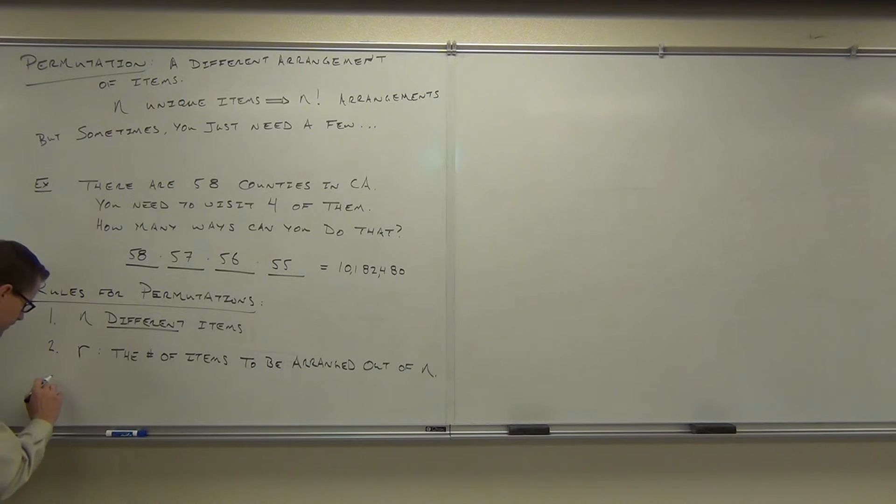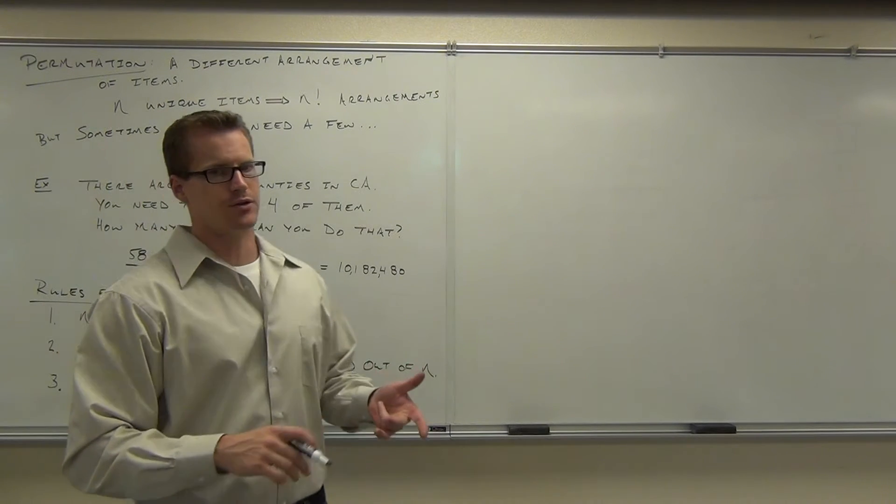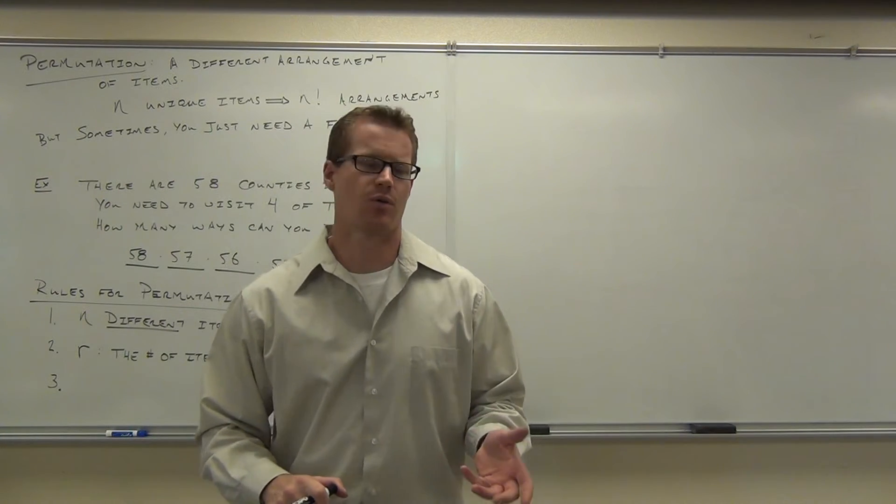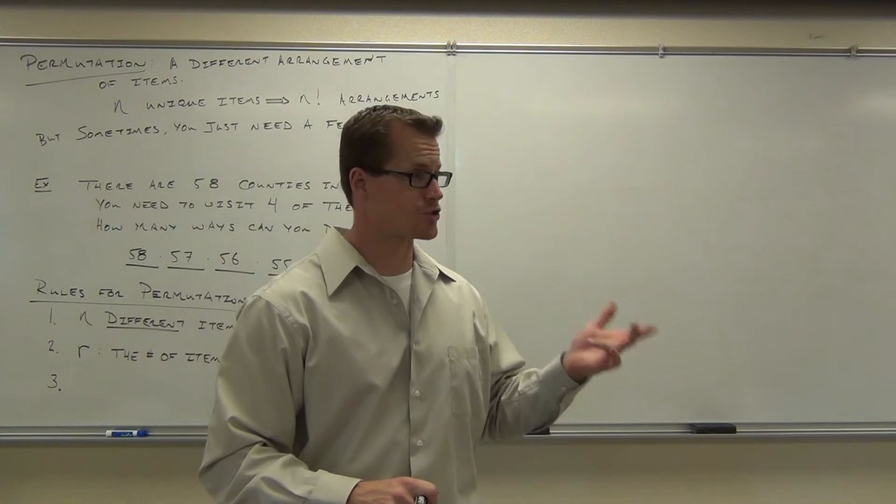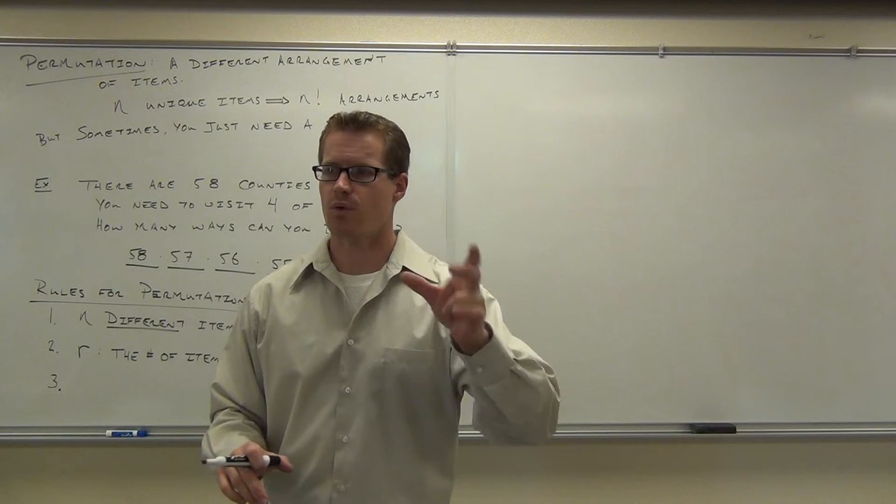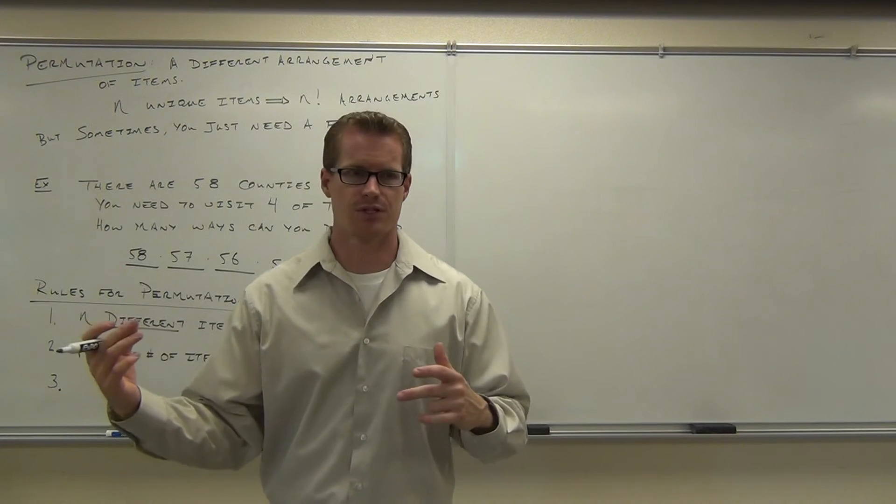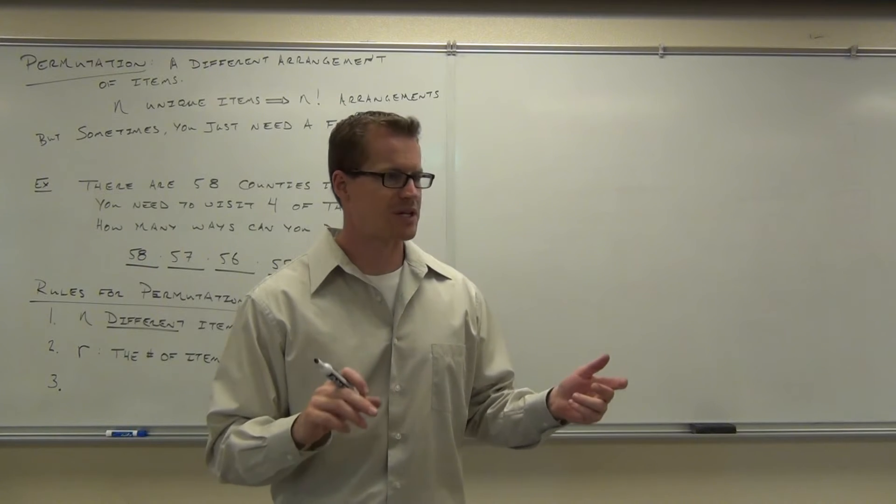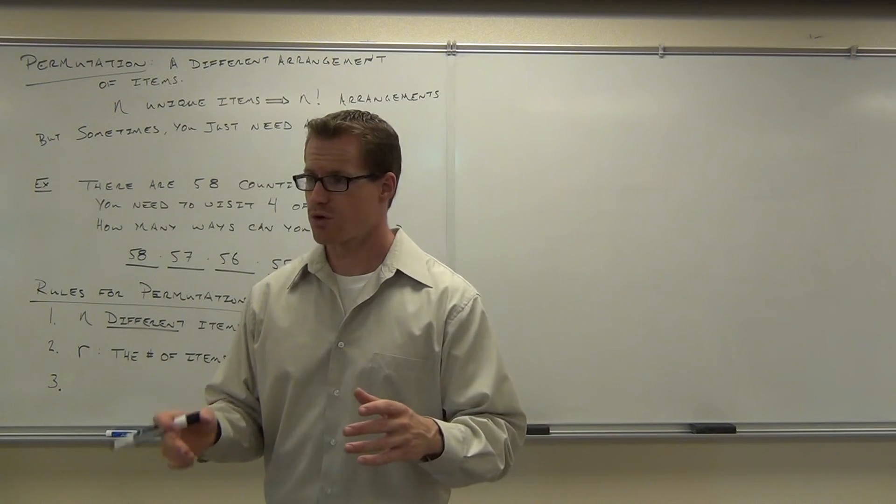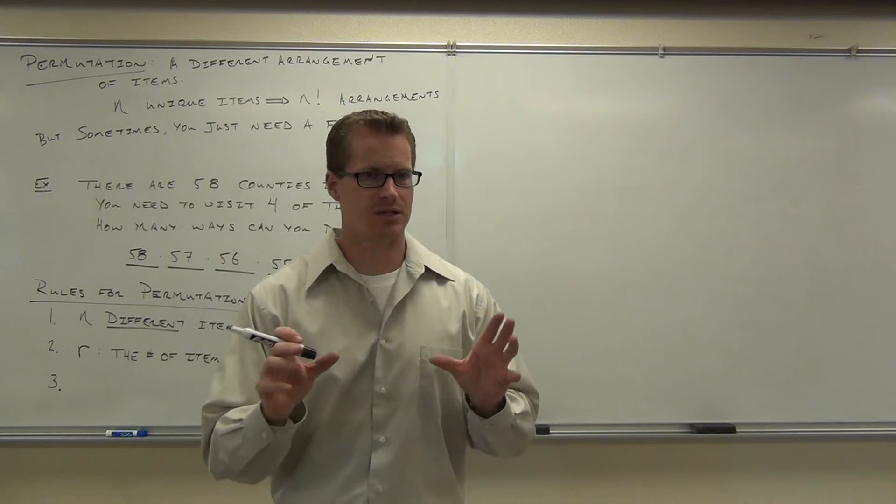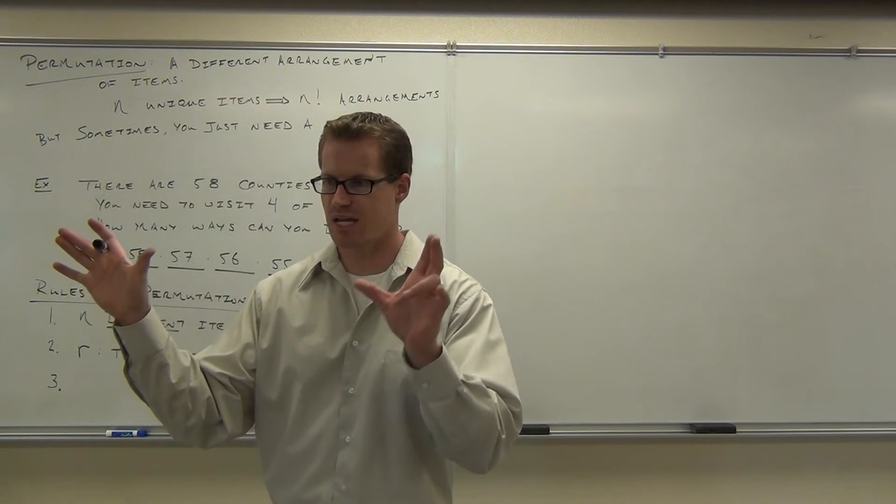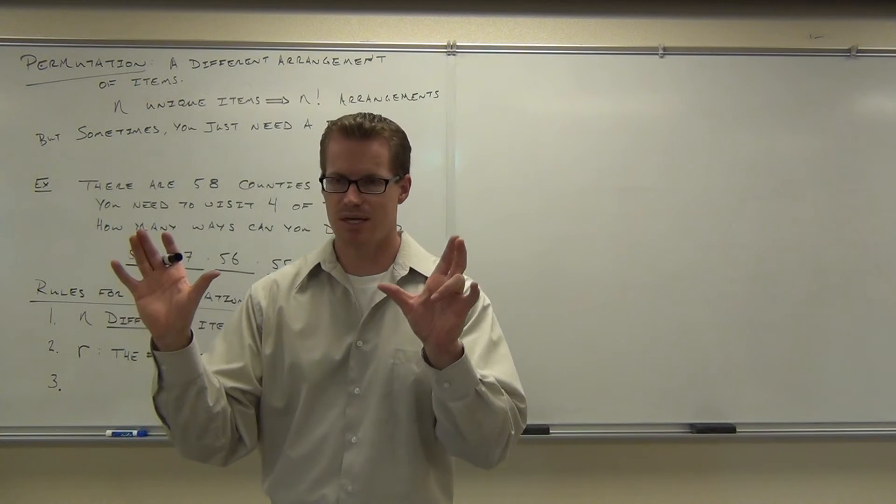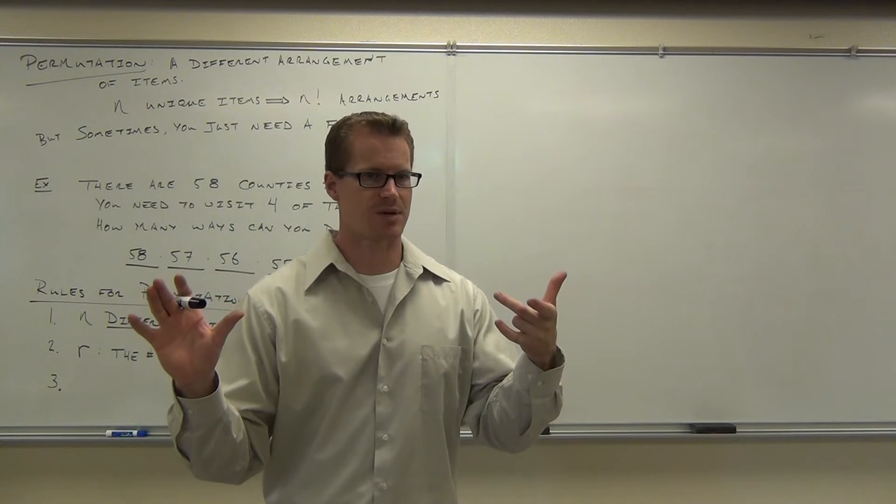The last one, in permutations, order matters. Now, you might be thinking, well, why are you even saying that? Because all we're talking about is different arrangements, and that's true. We're going to be talking about one more caveat of this probability stuff called combinations in which order is not going to matter. So, with permutations, I need you to know that order or arrangement means a different thing. It means that even though you have the same items, arranging them differently makes a difference. Does that make sense to you?